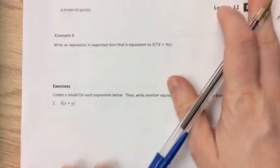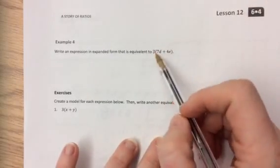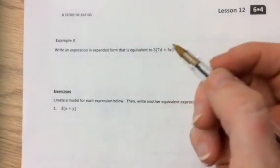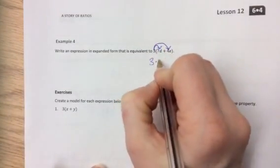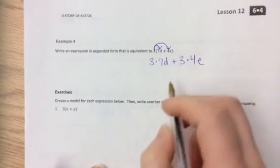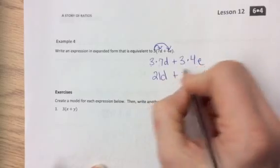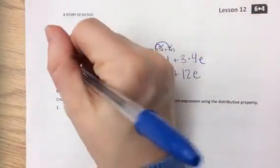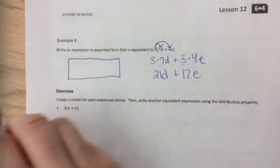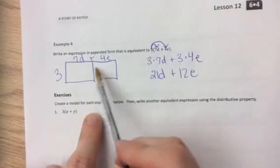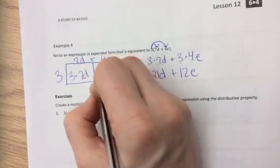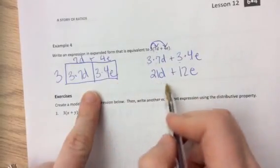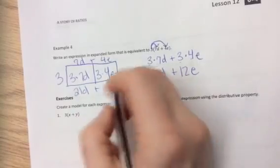Now we can write an expression in expanded form that is equivalent to 3 times 7D plus 4E. So we could do that using what I just explained to you, that you multiply both terms inside the parentheses by whatever is outside. So we're going to rewrite this as 3 times 7D plus 3 times 4E. 3 times 7 is 21D plus 3 times 4 is 12E. We could use the area model approach again to show how that's related. So we had 3 on this side, 7D plus 4E. The expanded form would be if I were to find the area of these two rectangles, then add them together. So to find the area of this rectangle, you do 3 times 7D plus the area of this rectangle, which is 3 times 4E, which is essentially what we would get here. Find the area of this rectangle, which is 21D plus the area of this rectangle, which is 12E.